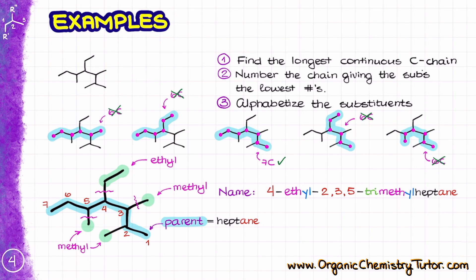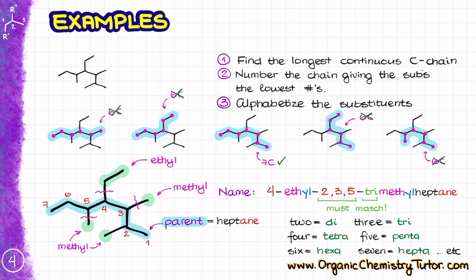Here is something very important. We have several methyl groups, so we must say exactly where those methyl groups are — that's what the 2,3,5 is all about. Also, we have three methyl groups, so we must indicate that by using the prefix tri. This is one of the most common mistakes in nomenclature — your locants must match the numeric prefix for how many groups you have. So: di for two groups, tri for three, tetra for four, penta for five, hexa for six, hepta for seven, octa for eight, and so on.